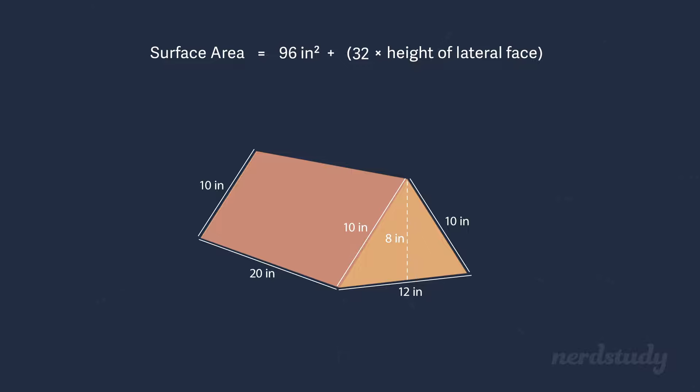So we've got 32 inches for the entire perimeter of the base. And we multiply that to 20. And we get 640 inches squared. So in total, we've got 96 inches squared plus 640 inches squared, which gives us 736 inches squared for the area of this triangular prism.